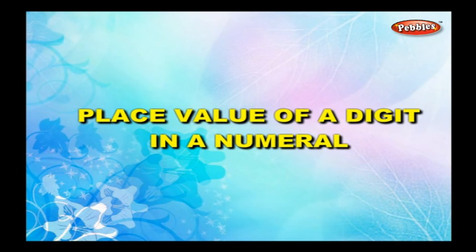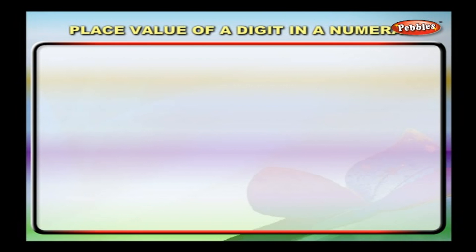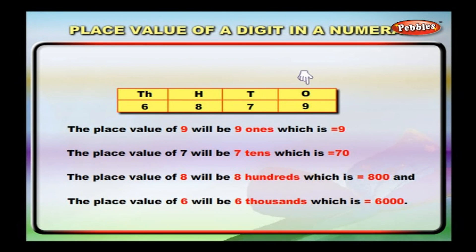Place value of a digit in a numeral. The place value of a digit depends upon its position in the place value chart. For example, arranging six thousand, eight hundred and seventy-nine: the place value of nine is nine ones, equal to nine; the place value of seven is seven tens, equal to seventy; the place value of eight is eight hundreds, equal to eight hundred; and the place value of six is six thousands, equal to six thousand.